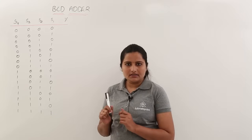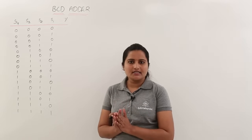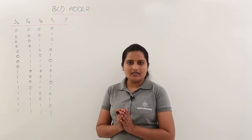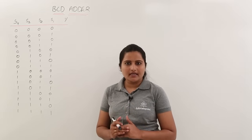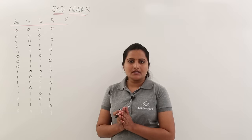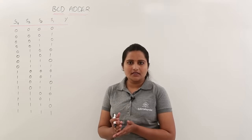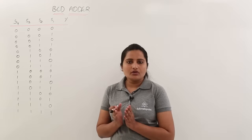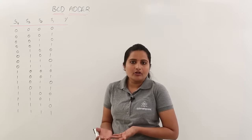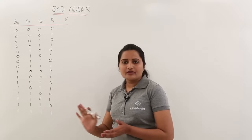In previous classes we covered the BCD addition process, where we add two BCD numbers. If carry is generated or the sum exceeds 9, we add 6 for correction, and whatever sum results is taken as the actual sum. We can use IC 74LS283 to add two 4-bit numbers, but in BCD addition, if an error occurs, that IC does not know how to handle it. For that, we need to design a logic circuit.